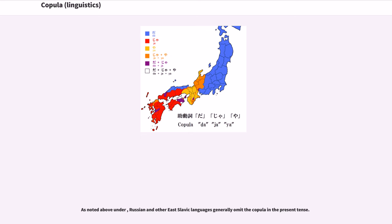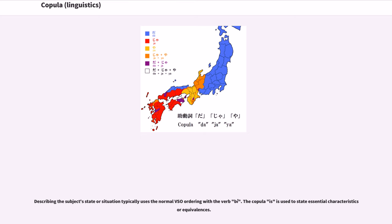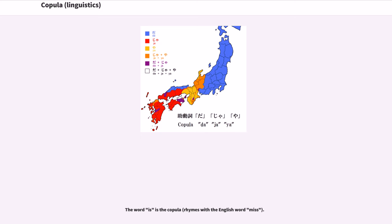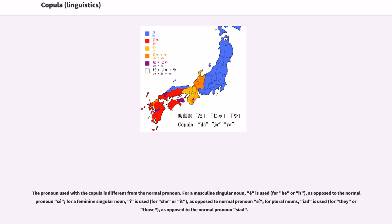Russian and other East Slavic languages generally omit the copula in the present tense. In Irish and Scottish Gaelic, there are two copulas, and the syntax is also changed when distinguishing between states or situations and essential characteristics. Describing the subject's state or situation typically uses the normal VSO ordering with the verb 'tá.' The copula 'is' is used to state essential characteristics or equivalences. The pronoun used with the copula is different from the normal pronoun: for a masculine singular noun, 'é' is used (for he or it), as opposed to the normal pronoun 'sé'; for a feminine singular noun, 'í' is used (for she or it), as opposed to normal pronoun 'sí'; for plural nouns, 'iad' is used (for they or those).